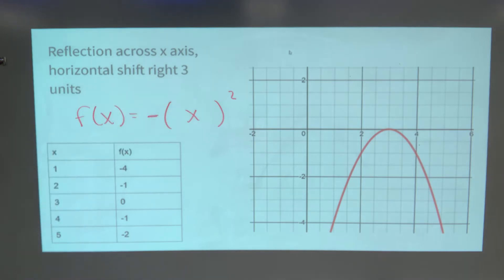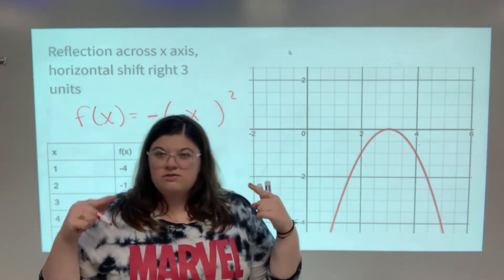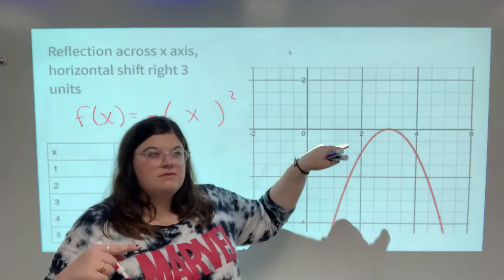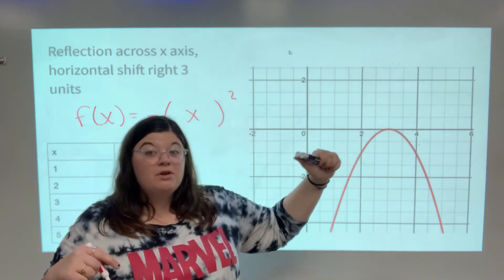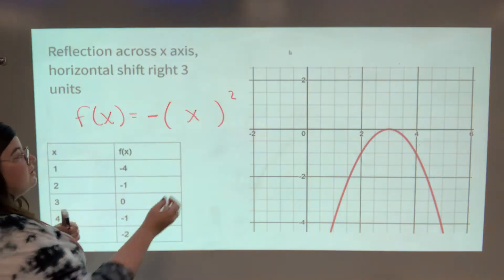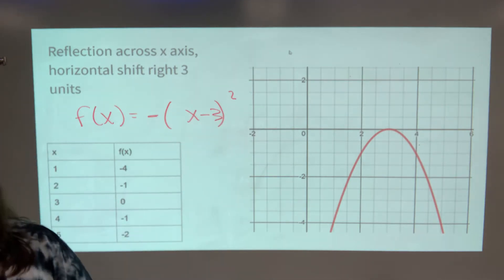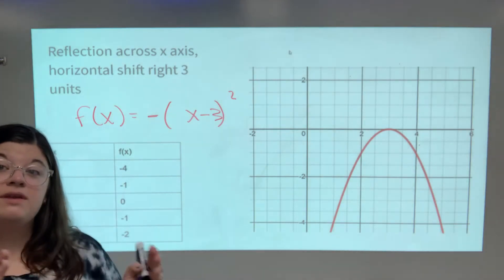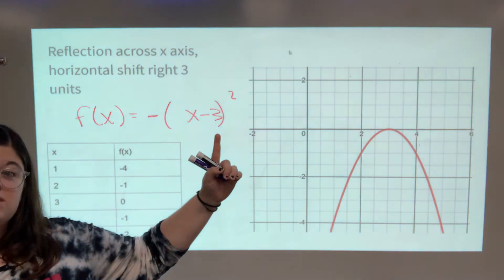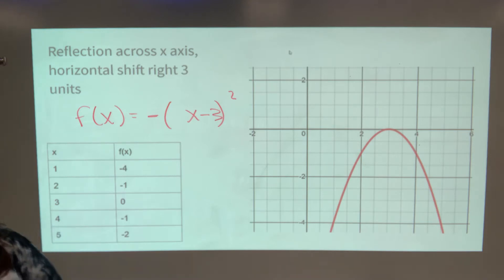For the horizontal shift right three units, I need to think backwards — going in the positive x direction means the parameter on the inside is minus three. That's why I added parentheses, because I knew there would be a parameter controlling the horizontal shift on the inside. So the equation is f(x) = -(x - 3)². Looking at all three representations, we can write that equation.